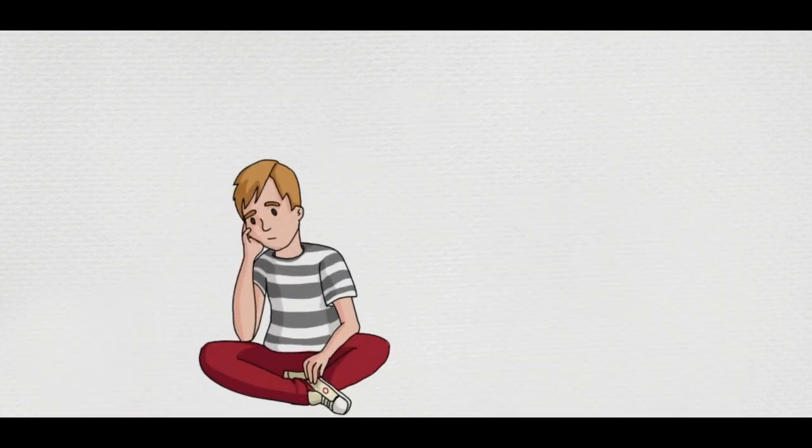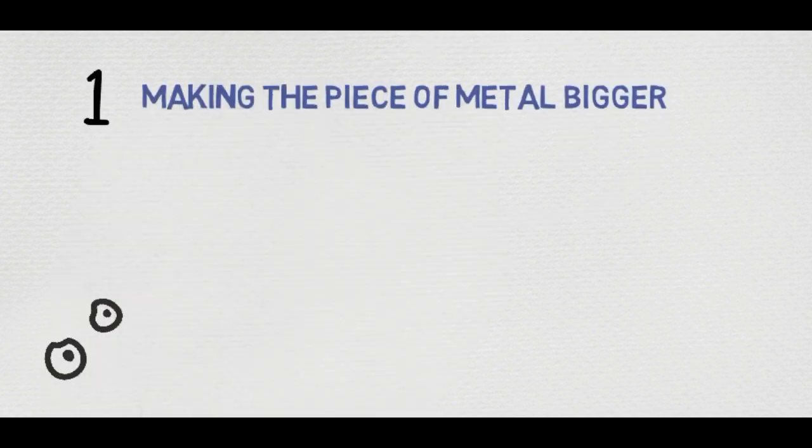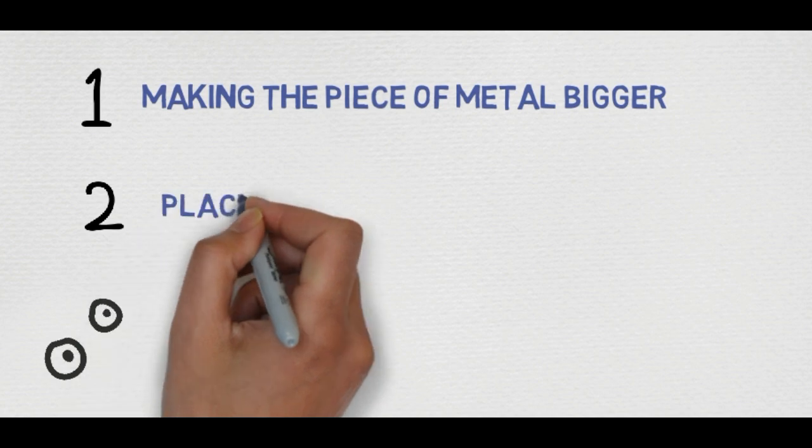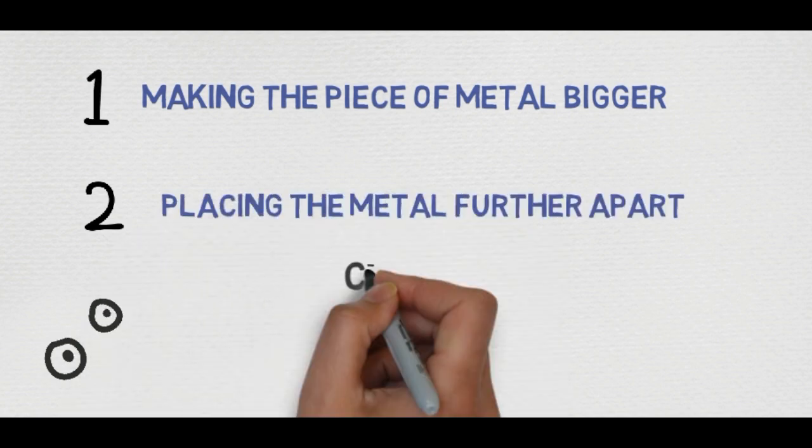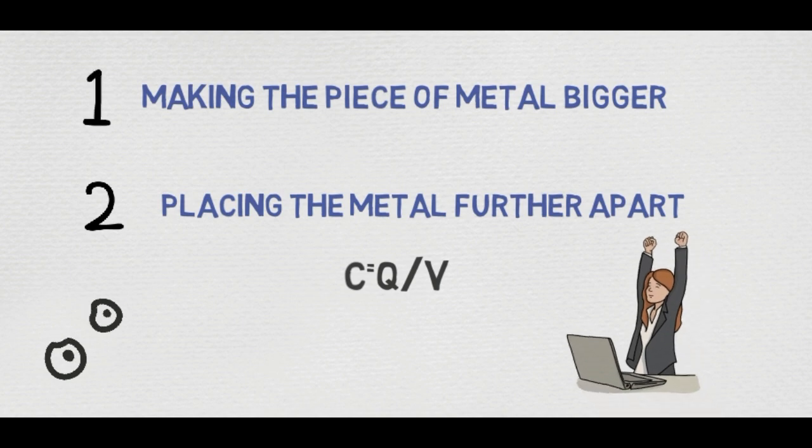You might think more charge stored in a capacitor means the capacitance must increase, but the capacitance stays the same because as the charge increases the voltage across the capacitor increases, which causes the ratio to stay the same. The only way to change the capacitance of a capacitor is to alter the physical characteristics, like making the piece of metal bigger, placing them farther apart. Just changing the ratio is not going to change that which represents the capacitance.